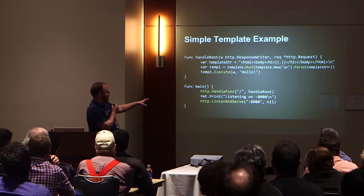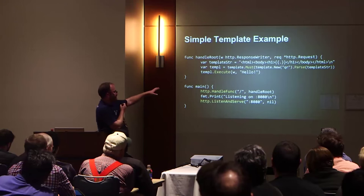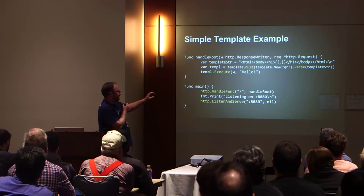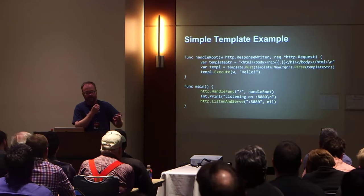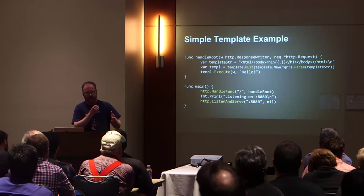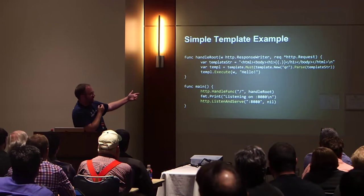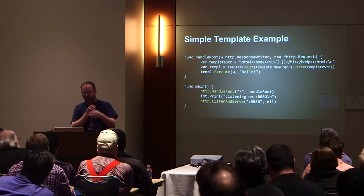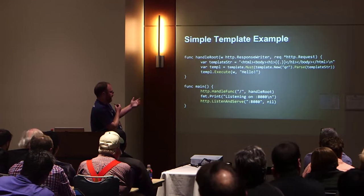All you do is call listen and serve, have the handling function, and execute the template. The 'must' is a helper that will basically produce a panic if the template is not parsable or not found — you don't have to use that. 'New' creates a new template with a name; in this case it's QR. You can create the template ahead of time before you actually execute it, and you can create multiple templates and refer to them inside each other by name.